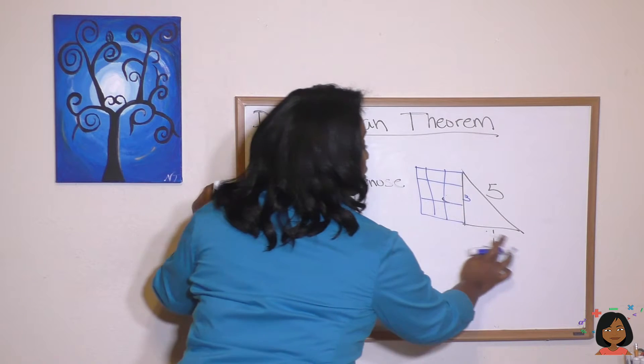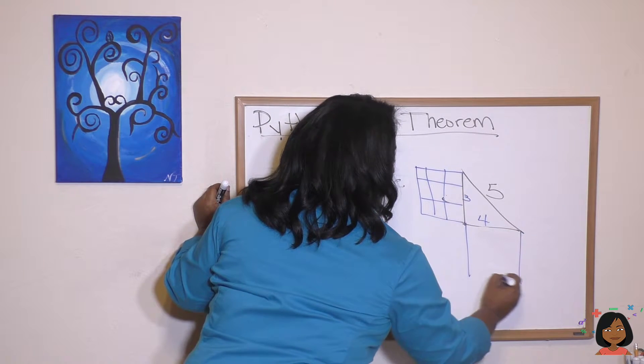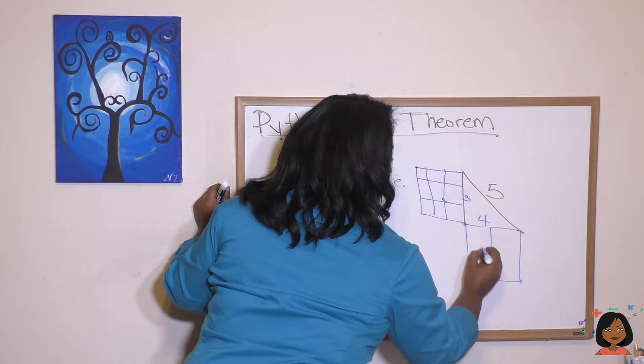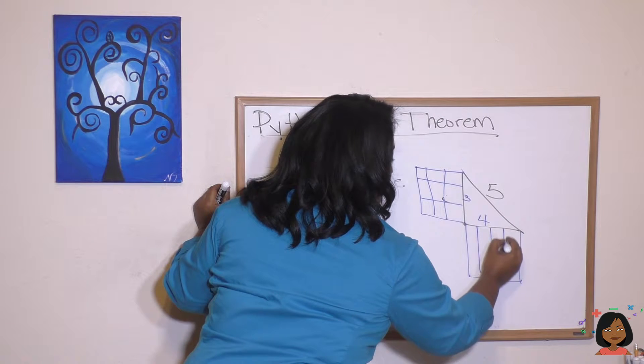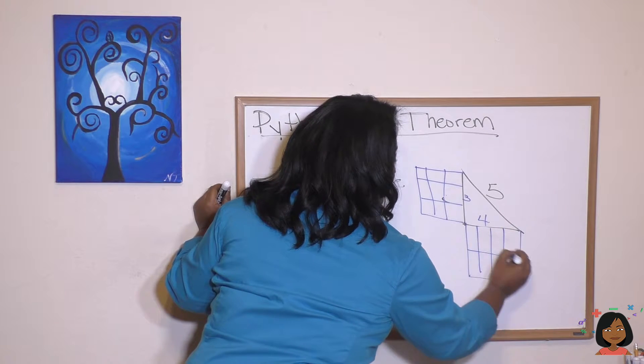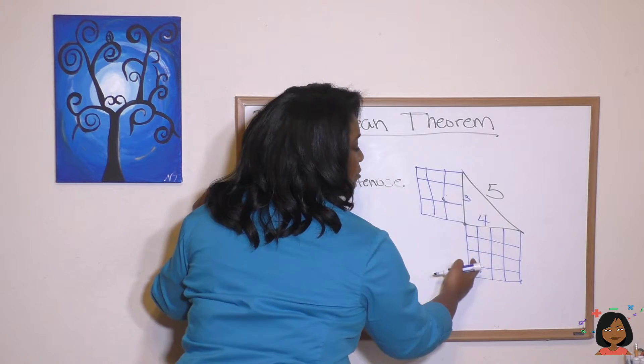And now let's do the other side. It's a 4 by 4. Here we go. Did I do that right? Yes, I did. And then, 1, 2, 3, 4. 1, 2, 3, 4. Okay.